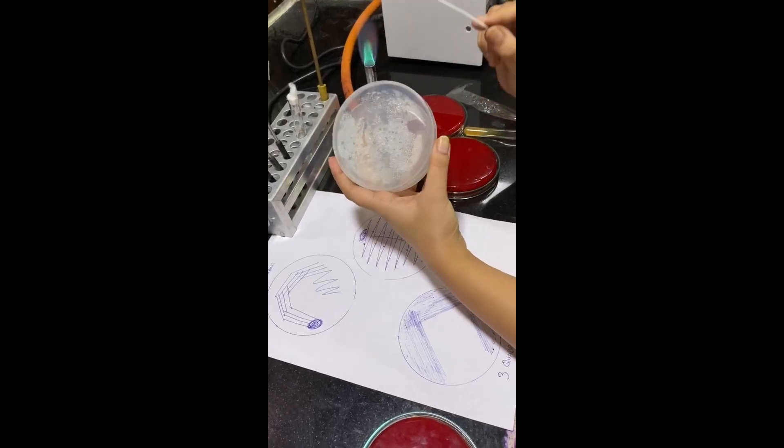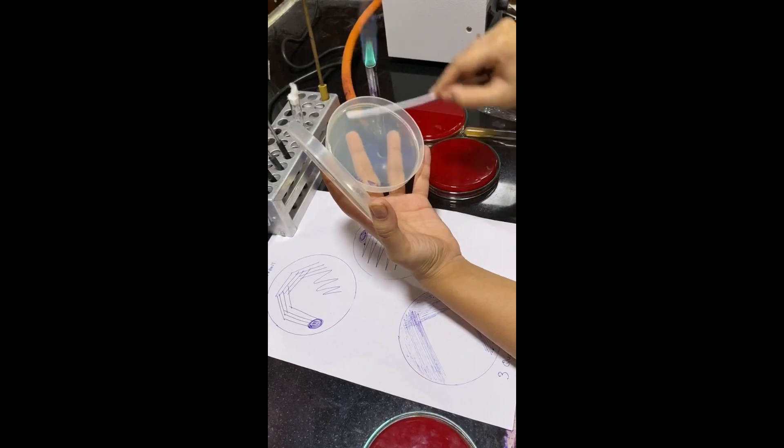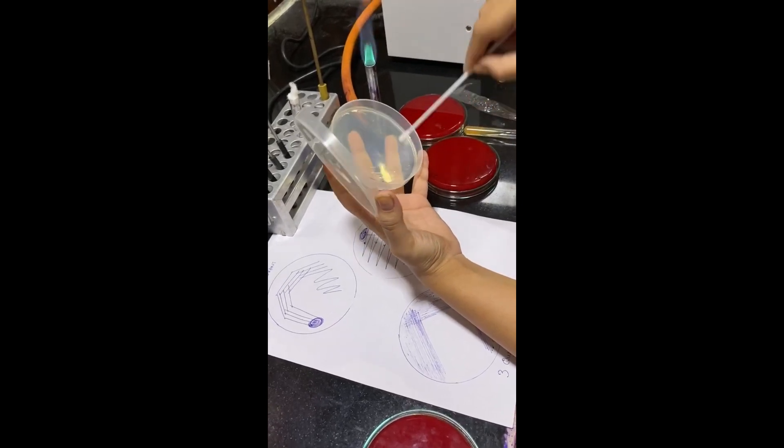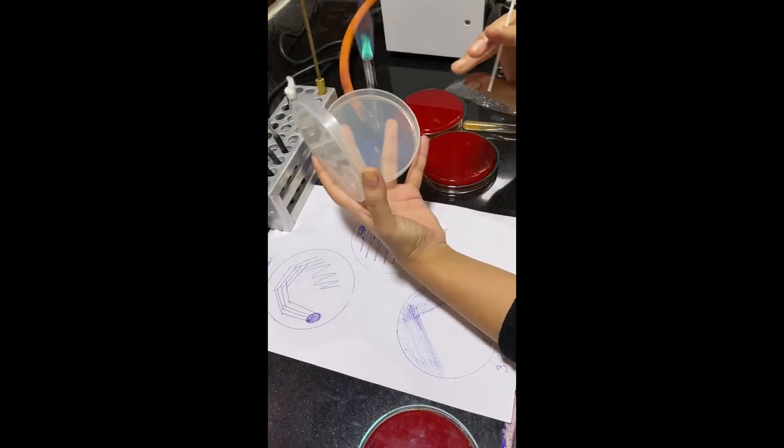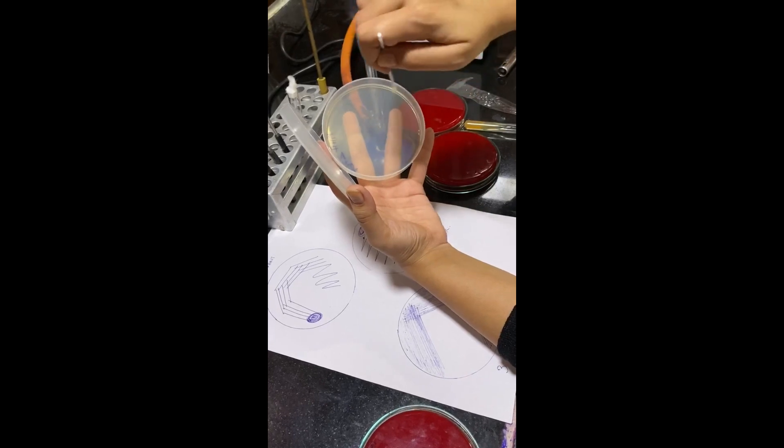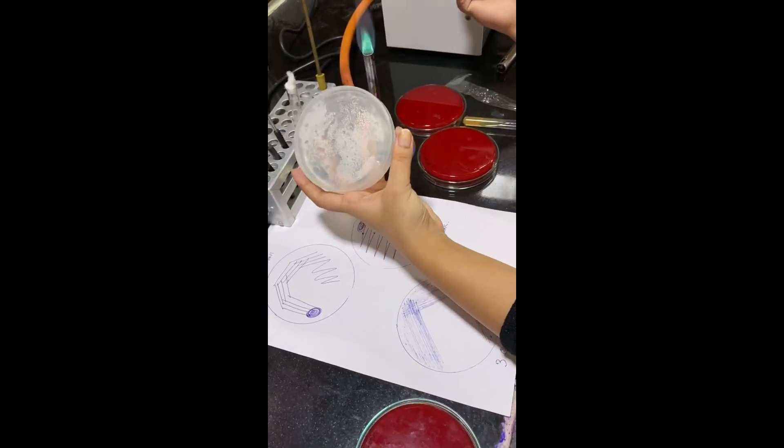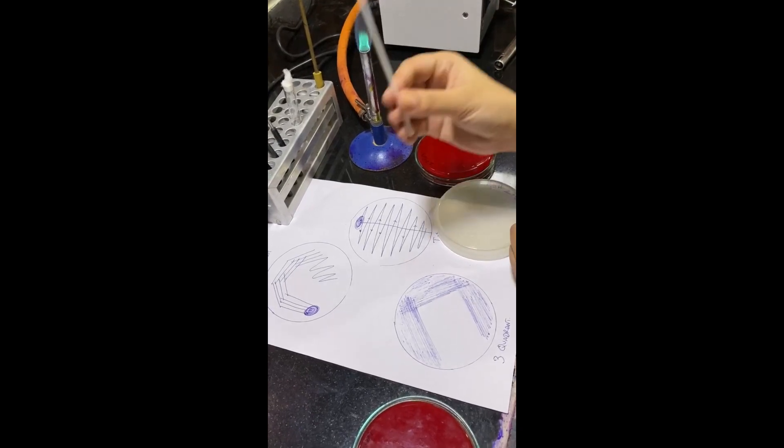A third time tilt should be done. After three times streaking the plate, cover up the edges like this so that a uniform pattern is obtained. We dispose of this.